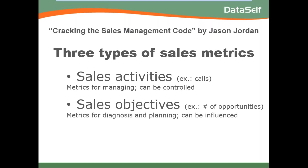The second type is sales objectives — for example, increasing the number of opportunities or reaching your sales quota. You cannot really control these. You can influence them: the more sales activities, the more opportunities you get and the more you'll meet your quota, but it depends on other people. You use these metrics for diagnosis of your systems, for planning, and to influence — but since they depend on clients and prospects engaging with you, they're not fully in your control.